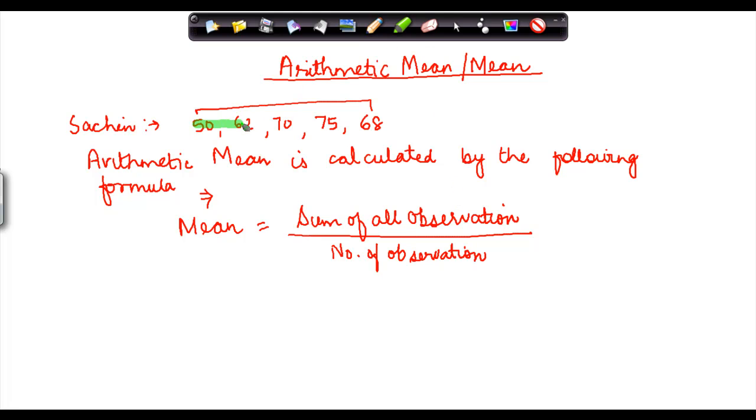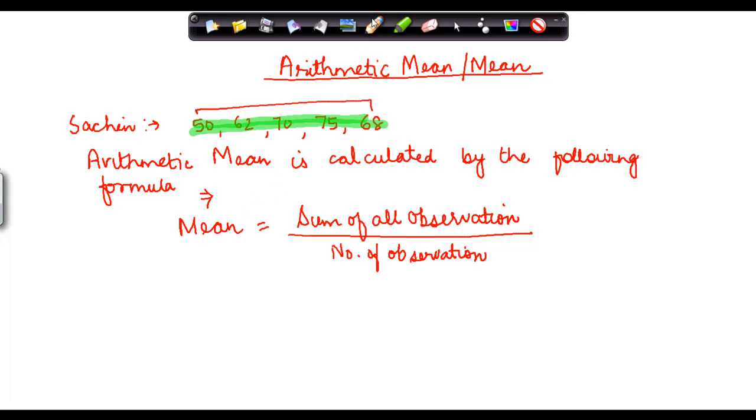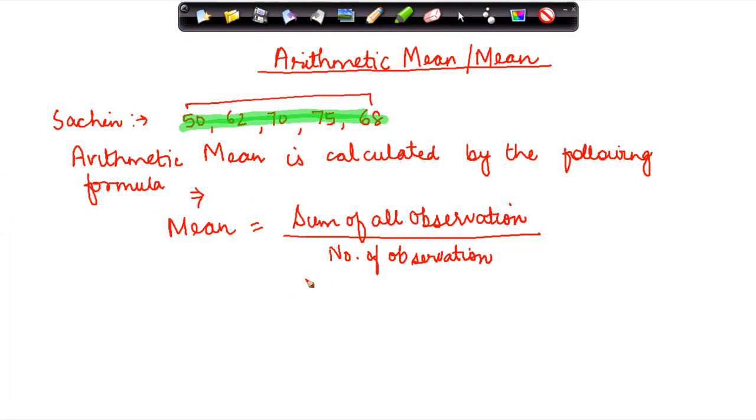You can call it a variable or a number; here we're using the word observation. In this case, I have these as observations. To calculate the mean or arithmetic mean of Sachin's scores, I need to calculate the sum of all observations: 50, 62, 70, 75, and 68.